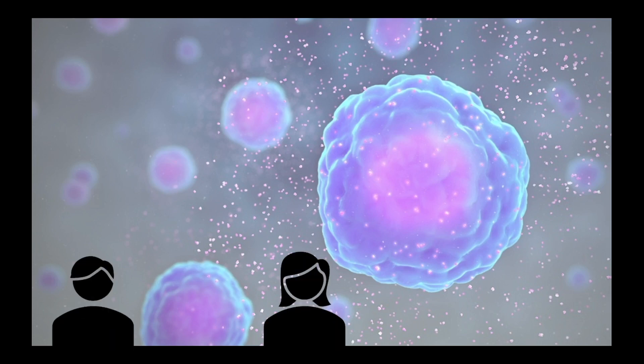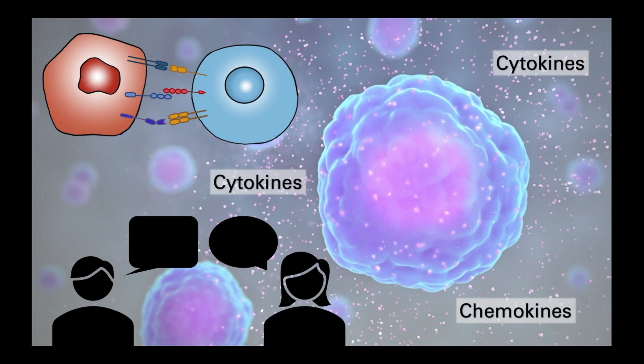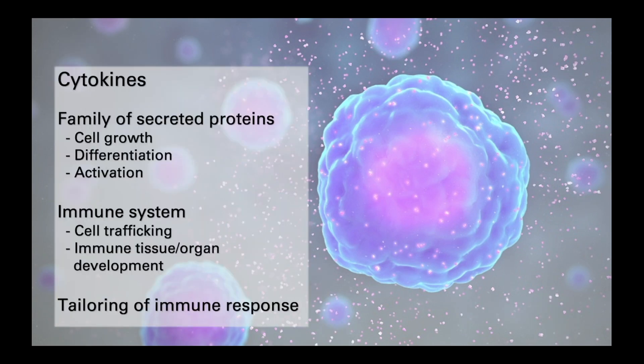The immune system needs to be able to communicate. Whereas you and I would use words, the immune system does this either through a series of receptors and counter-receptors on cells, or through soluble mediators called cytokines. Cytokines are a diverse family of secreted proteins that have a wide range of roles in the body, including cell growth, differentiation, and activation. In the immune system, they are responsible for cell trafficking, and in the early stages of development, they help shape immune tissues and organs.